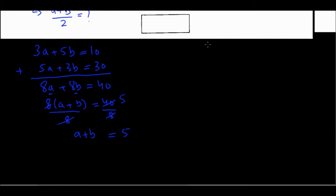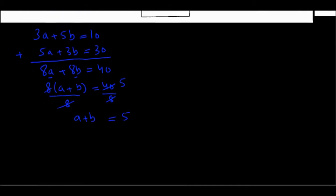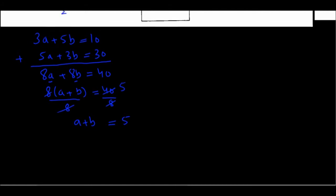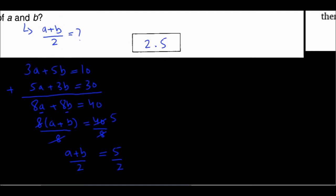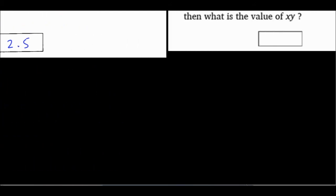And now since I want to find the average, which is just a plus b over 2, as I wrote over here, I have a plus b over 2. Well, I'll divide both sides by 2. So my average is 5 over 2 or 2.5. Simple enough. So that's one of the ways GRE might test you on solving equations simultaneously.